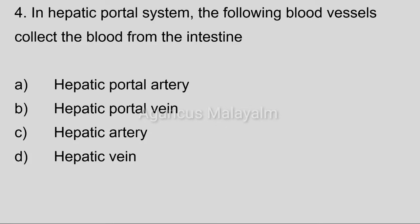Fourth question: In the hepatic portal system, which of the following blood vessels collects blood from the intestine? Option A: hepatic portal artery. Option B: hepatic portal vein. Option C: hepatic artery. Option D: hepatic vein.